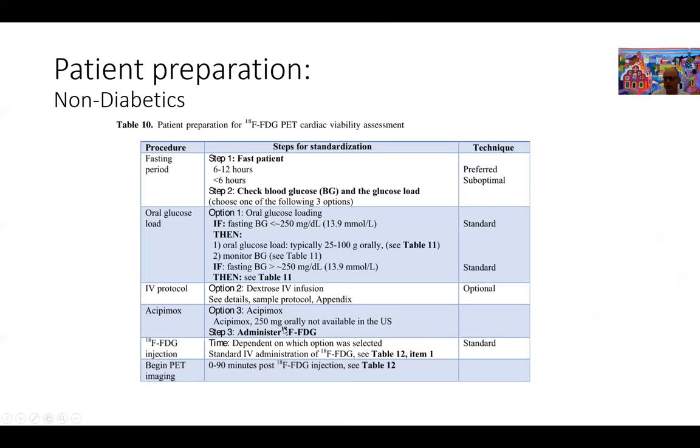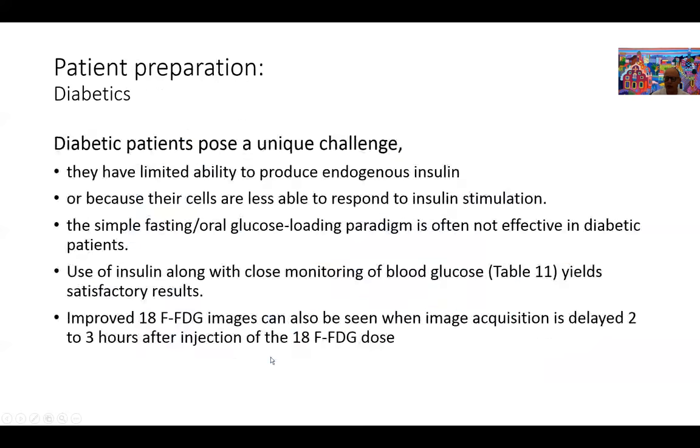We load them with glucose and then we start checking the blood sugar to see where we are before we start infusing insulin and then after that FDG. Once we get to the point of administering FDG, we check the glucose again. If it's still elevated, we inject insulin. We have an algorithm for that available in the document I showed you earlier, and then we begin the PET imaging at zero to ninety minutes depending on how soon we achieve the glucose clamp.